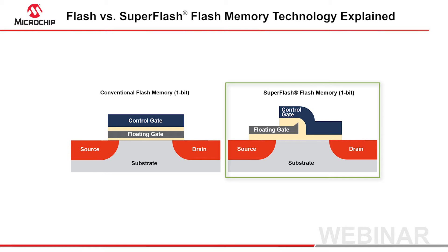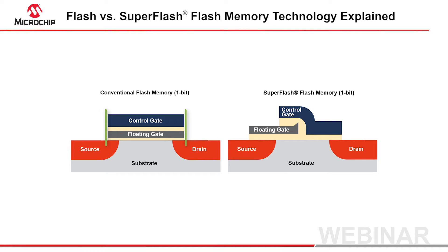There are two key structural differences. First, in a standard flash cell, the floating gate and the control gate align vertically and form the full transistor gate between the source and the drain. But in a super flash memory cell, the control gate is split, covering just part of the floating gate here and then also serving as the direct gate over the drain edge here.